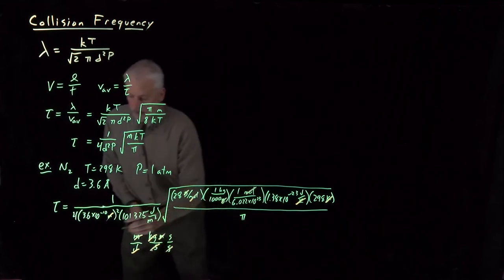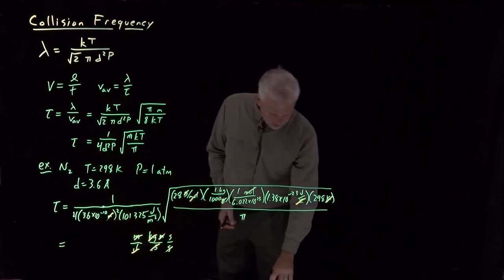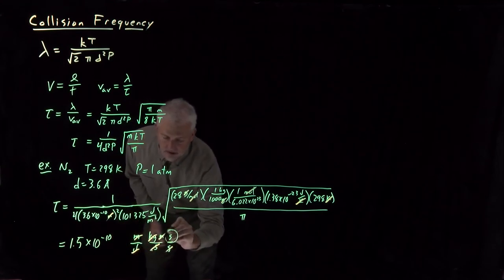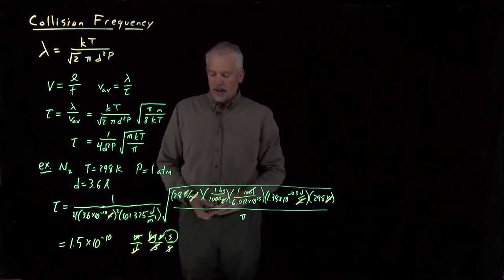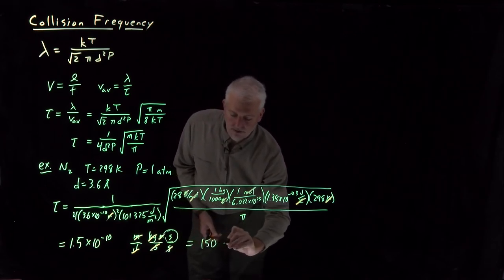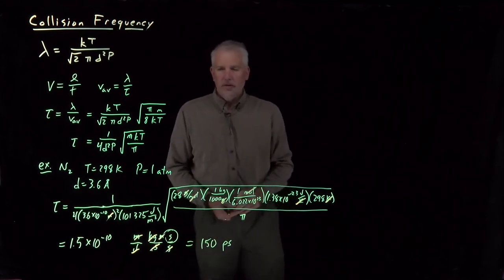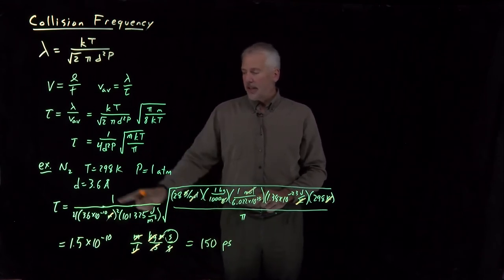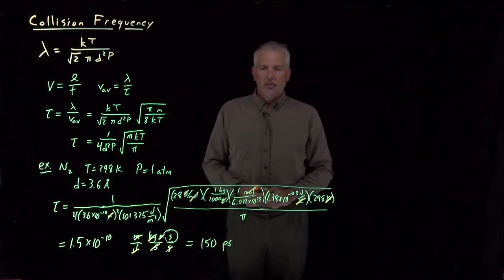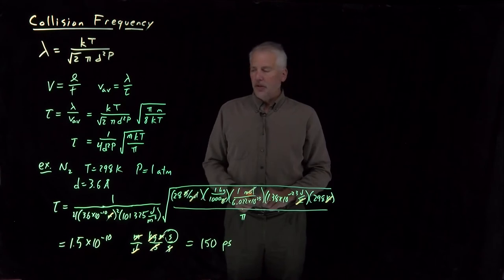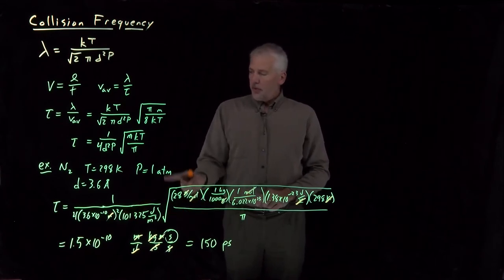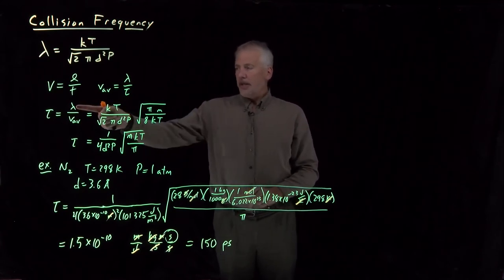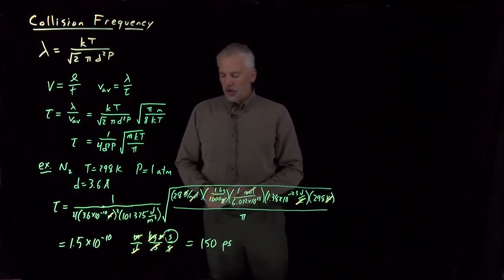Doing all the math gives a value of 1.5 × 10⁻¹⁰ seconds — that's 150 picoseconds, since a picosecond is 10⁻¹² seconds. That is the average time between collisions for a nitrogen molecule in the gas phase at room temperature and pressure. There were two options for this calculation: the full expression just used, or going back to the previously calculated mean free path and average velocity.